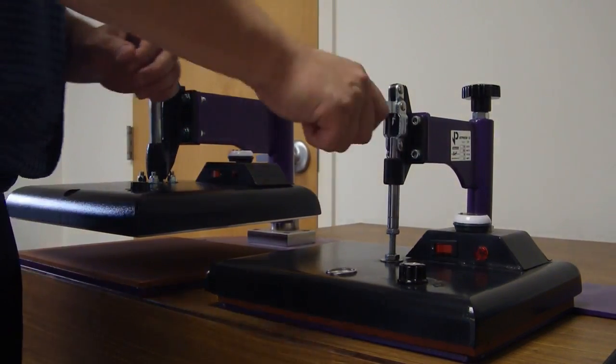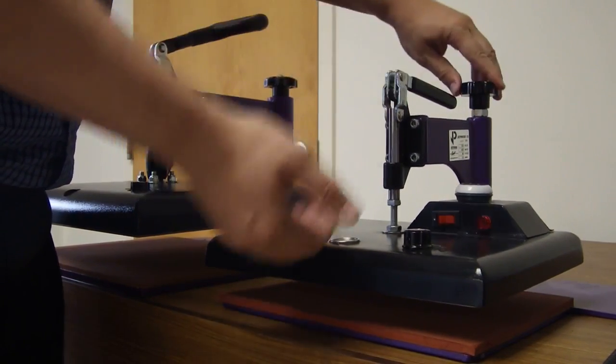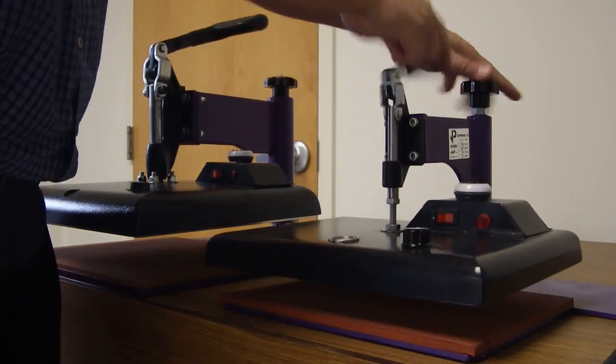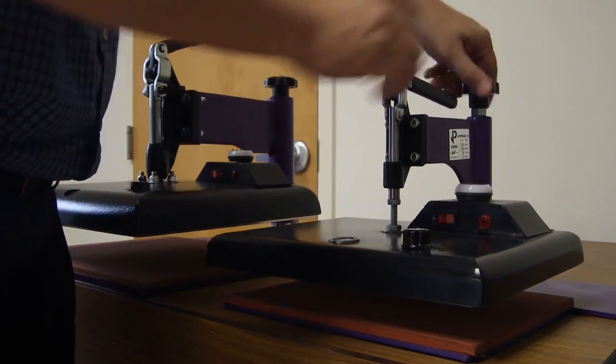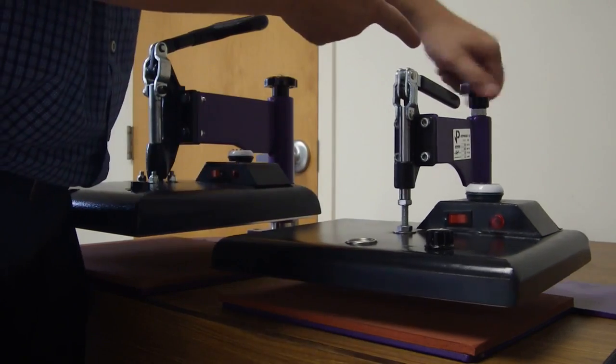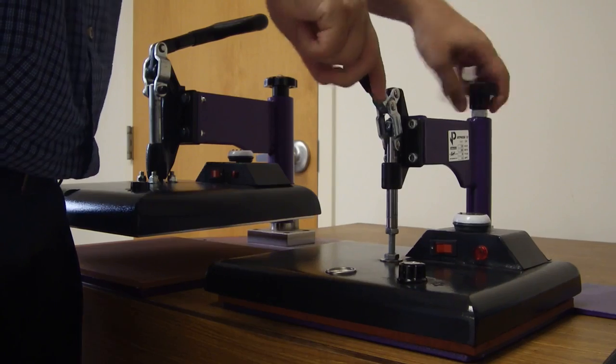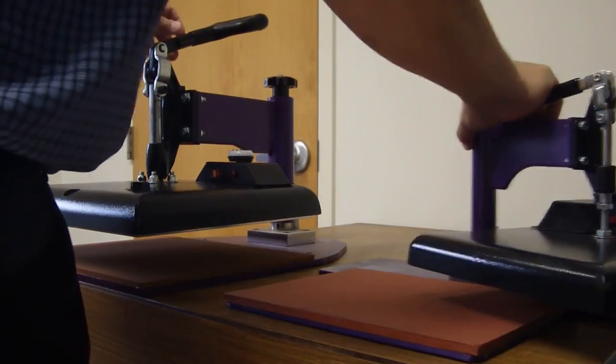Obviously if you have something much thicker, you're going to turn this counterclockwise to raise the head up. Right now it has no pressure, but if you have a much thicker item in there it'll clamp. Bottom line: turn this to the right to lower the platen, turn this lefty loosey to raise the platen. And you want to set it so that you have a good two-handed clamping force.